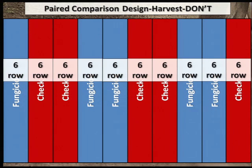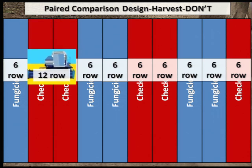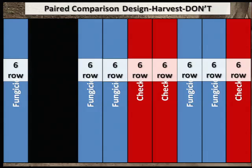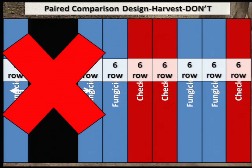With paired comparison designs, it's important to plan for the size of your equipment and ensure that each treatment comparison strip is harvested. For instance, if each of your treatments were six rows wide and you have a 12-row combine, it's important that you do not harvest two treatment strips in the same pass. This would disregard the randomization that you introduced in your block designs — you would no longer be able to compare the fungicide versus the check treatment for Rep 1 and the check versus the fungicide treatment for Rep 2.